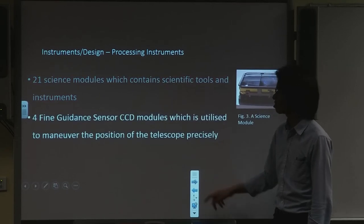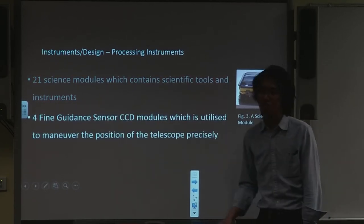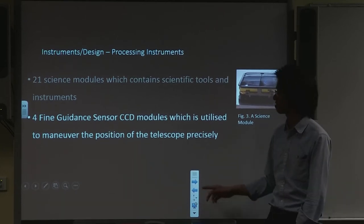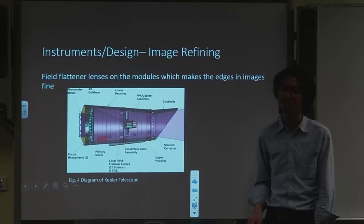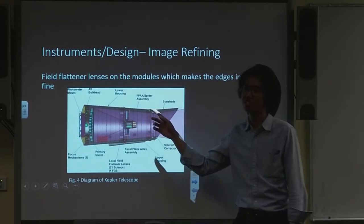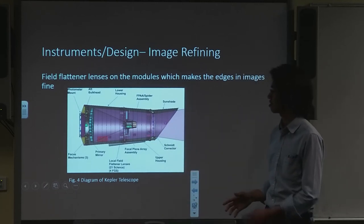The telescope contains 25 modules. 21 of them are for making measurements, and four of them are controlling the movement of the telescope. And it also contains few flattened lenses, which is part of processing to make the images finer.